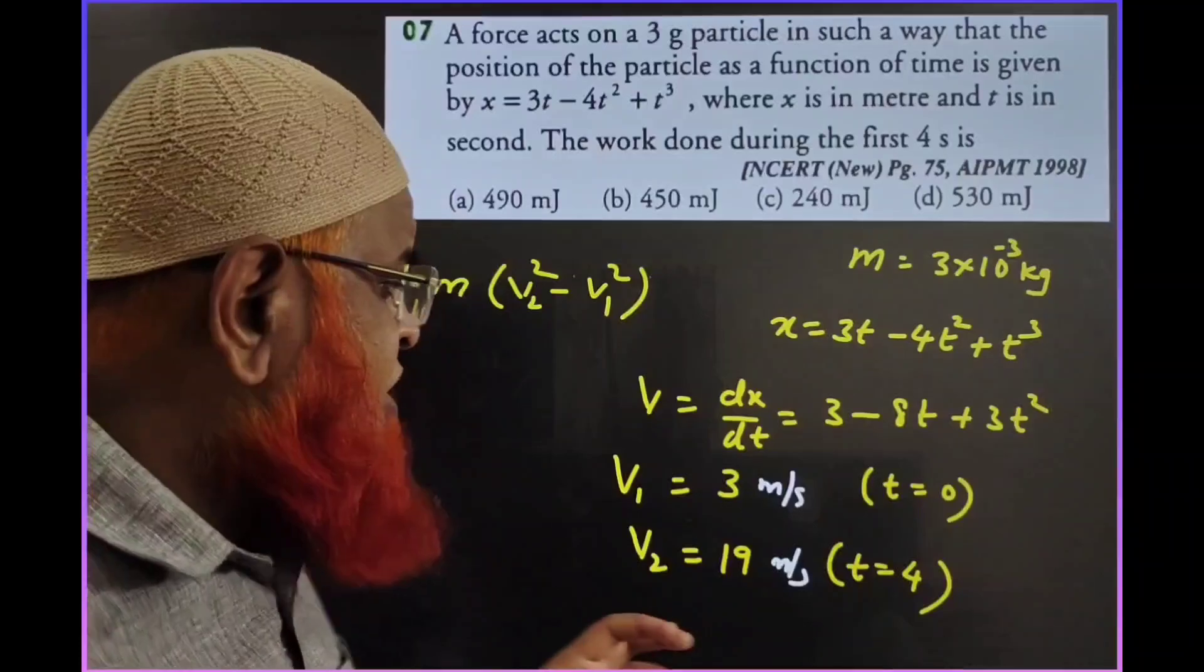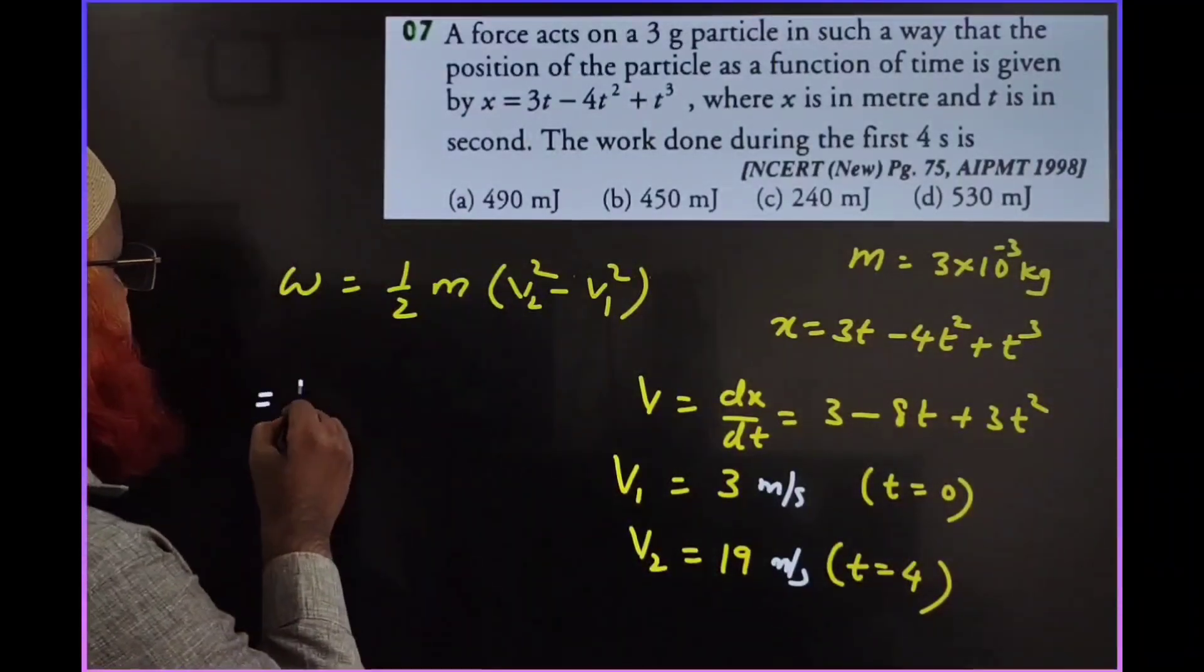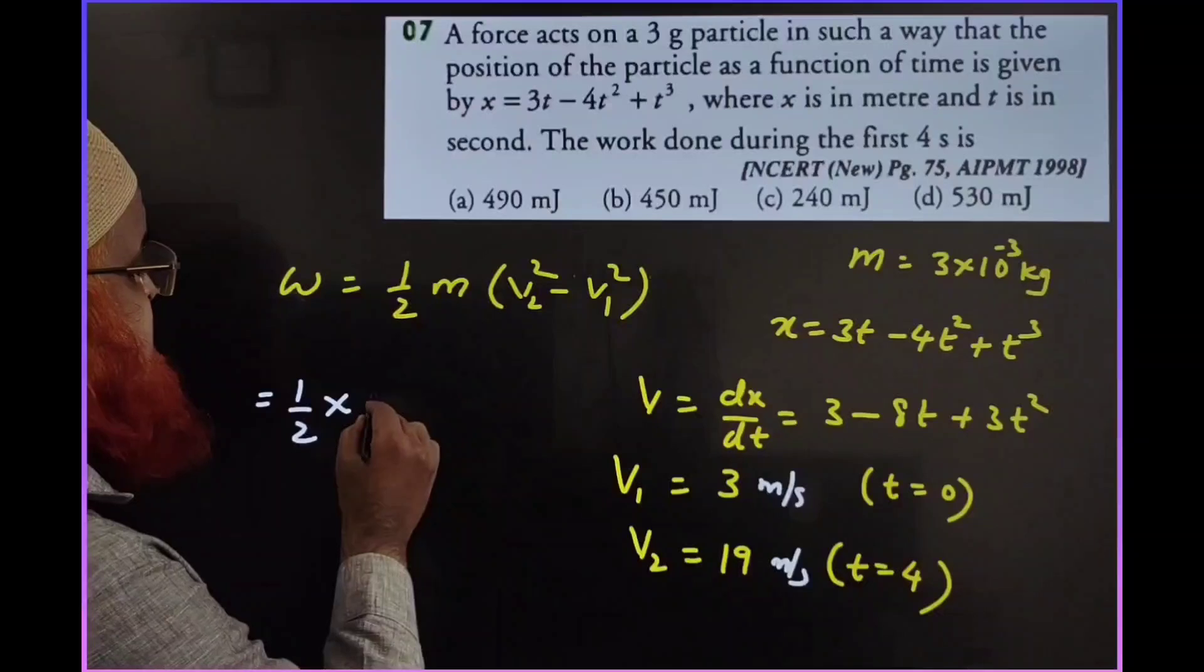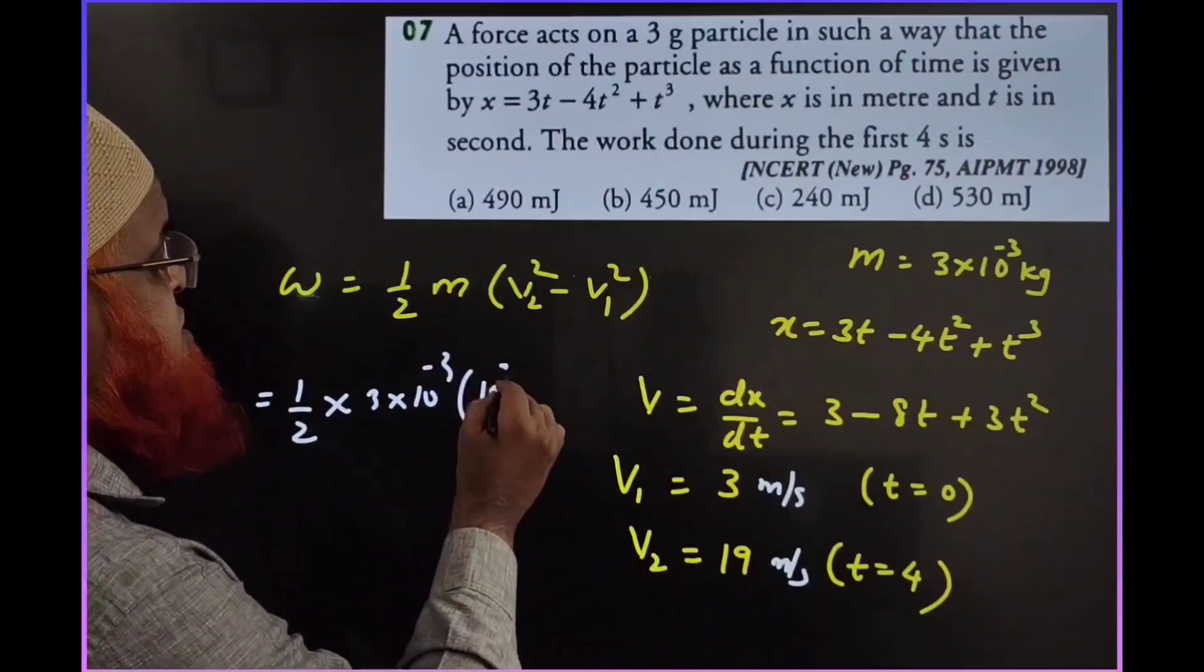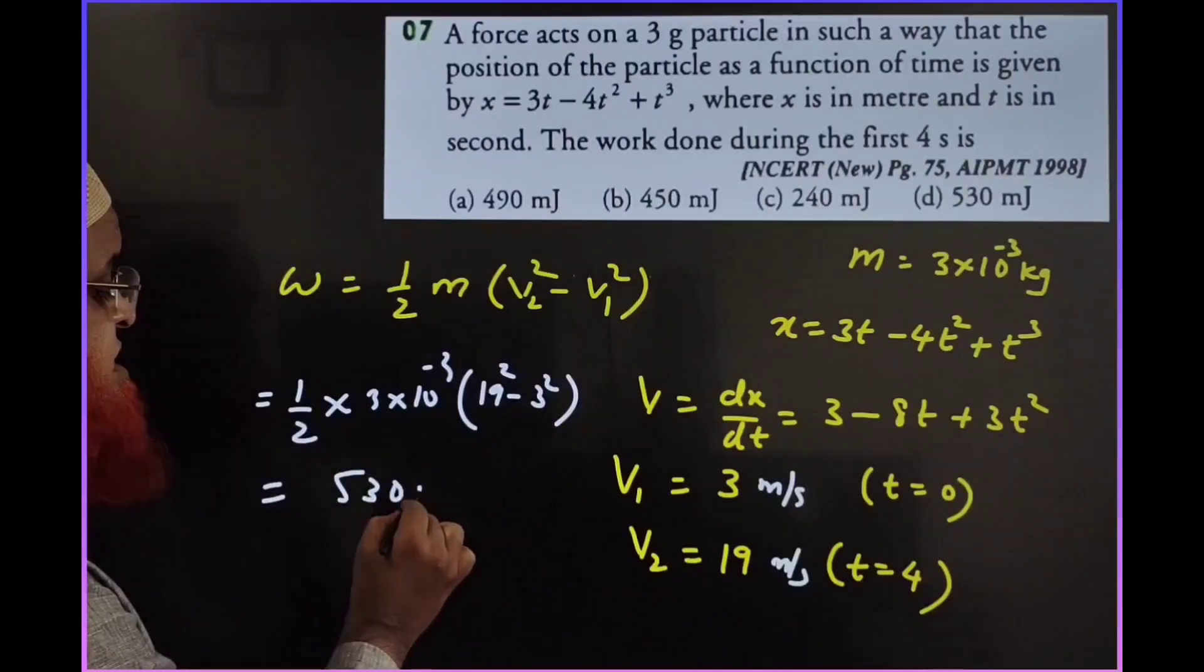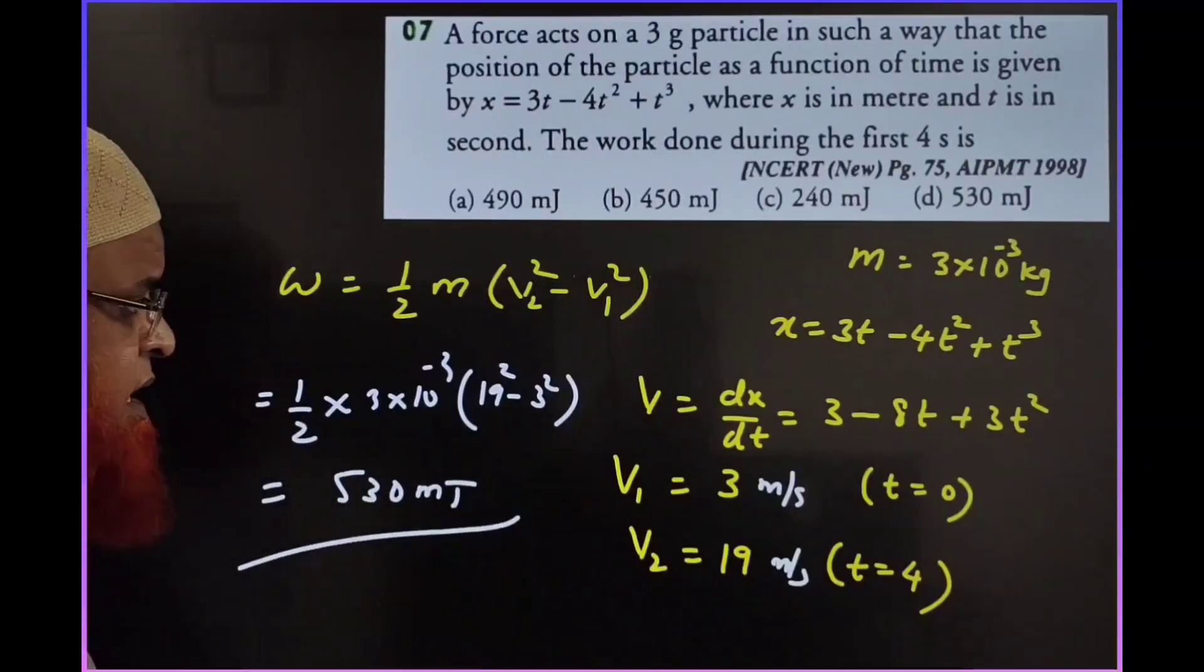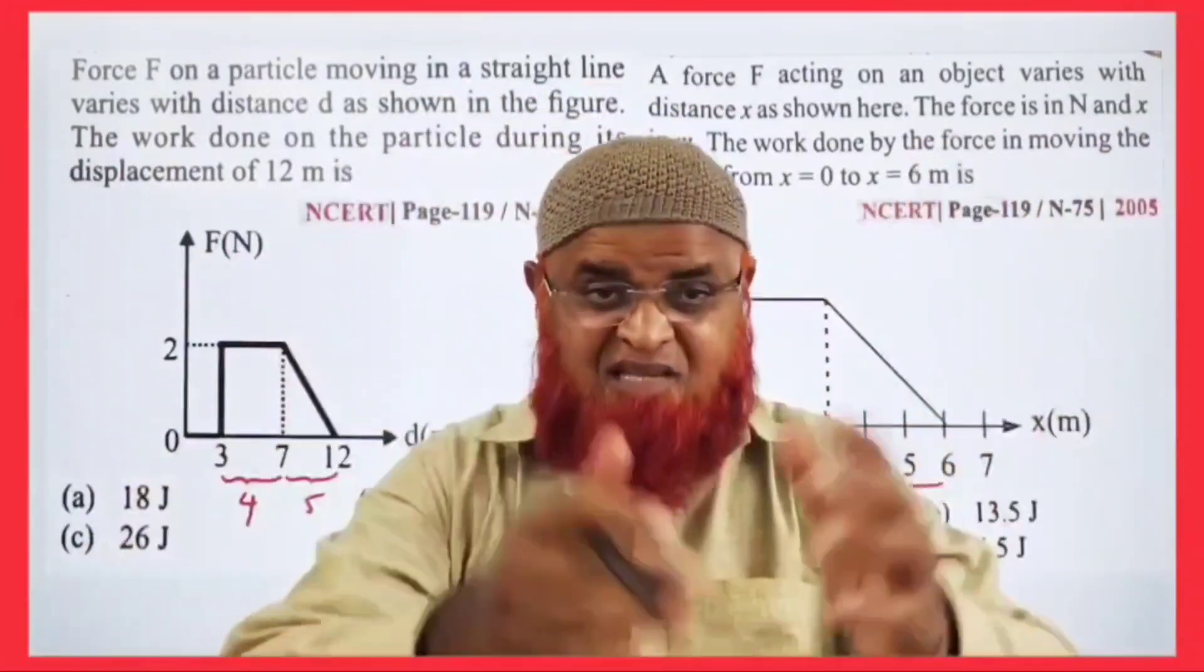After that I use the work-energy theorem to solve this problem. I write (1/2) × mass × (v₂² - v₁²) = (1/2) × 3×10⁻³ × (19² - 3²). This gives approximately 530 millijoules. Thank you very much, friends.